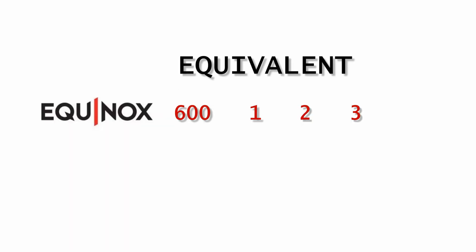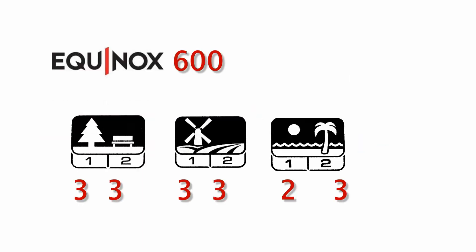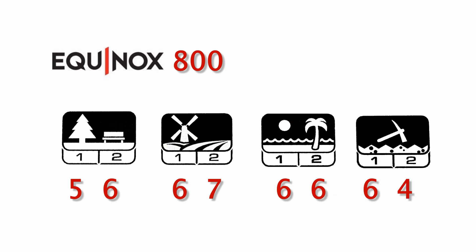The Equinox 600 has three recovery speeds and the 800 has eight. The default recovery speed for the Equinox 600 and the 800 varies by mode.